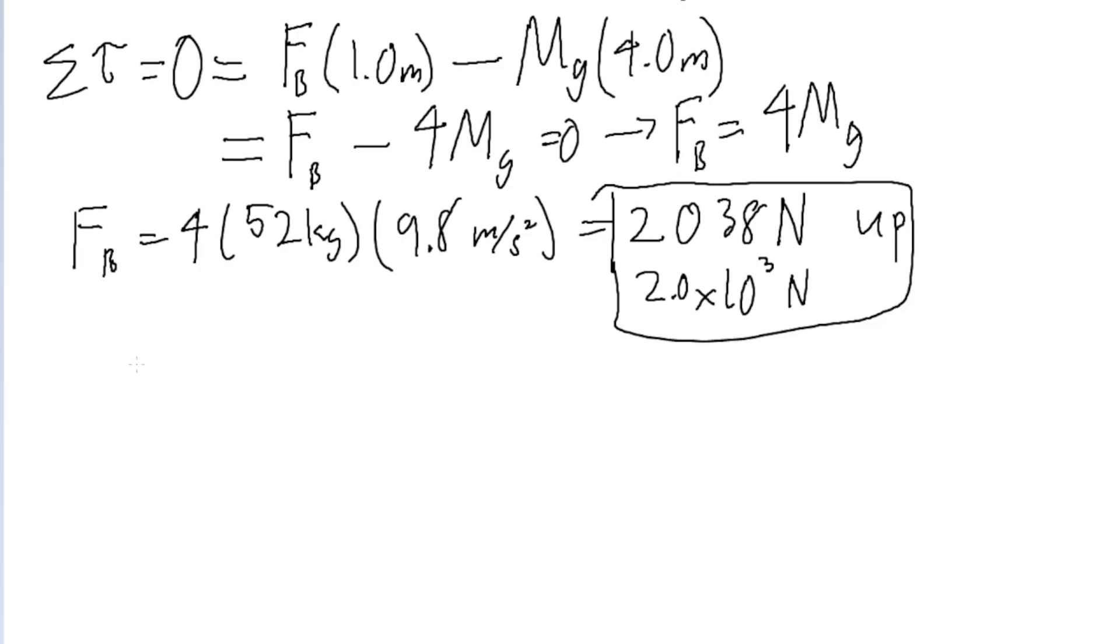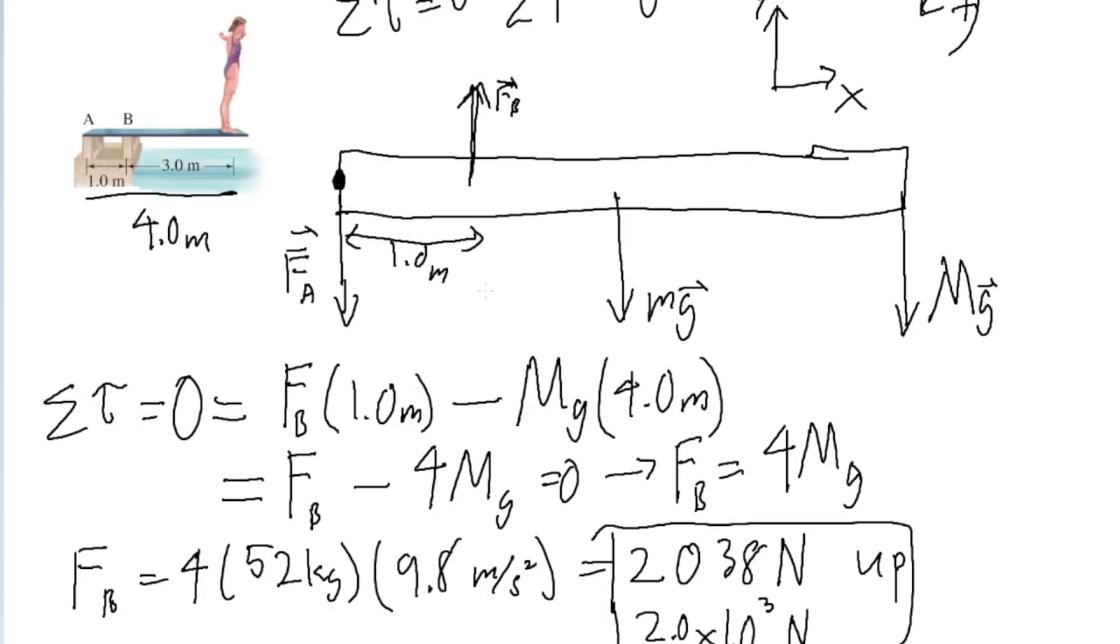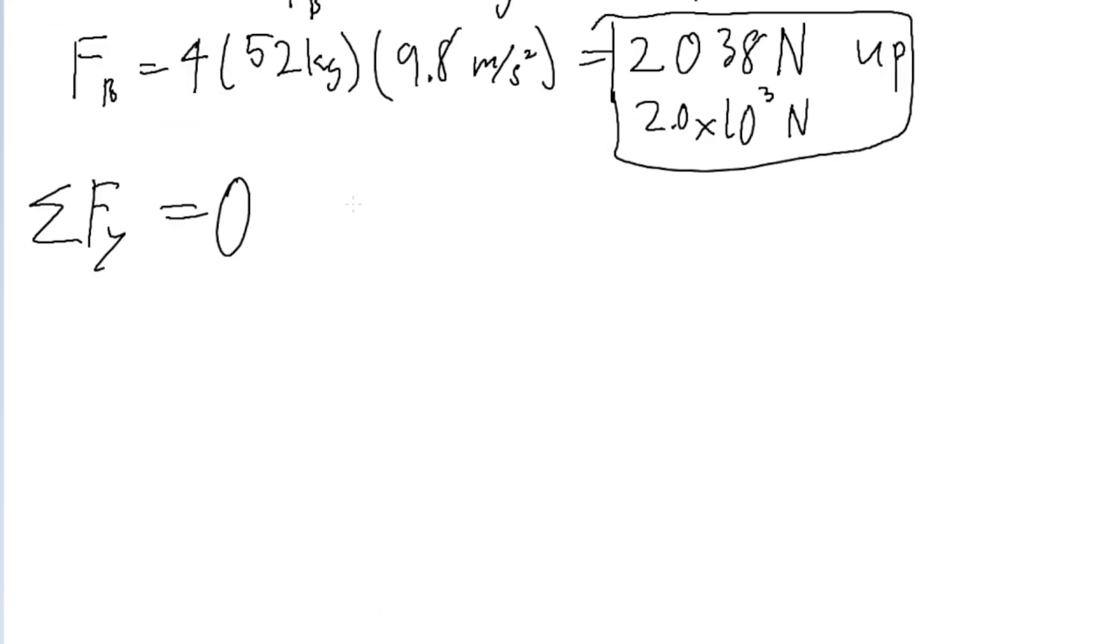But the problem wants us to find f sub a as well, not just f sub b. But the way we defined our setup, we can't find that using the torque alone. So let's use a net force equation, because we know from statics that if the diving board is at rest, the net force in the y direction should be zero as well. So if we look back at our free body diagram, we can see that f sub a is pointing downwards, mg is also pointing downwards, and f sub b is pointing upwards. So let's take account for that in our force equation.